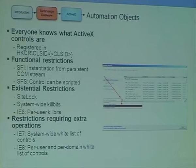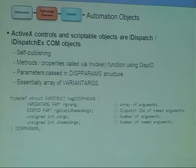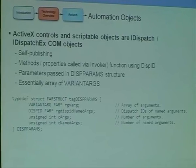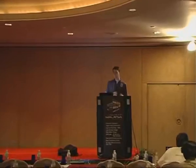Kill bits are a mechanism where, when an ActiveX control is known to be dangerous in an unsafe environment, IE can set a registry key to ensure it won't instantiate that object on behalf of the user. ActiveX controls utilize COM quite extensively. ActiveX controls are scriptable objects that expose an IDispatch or IDispatchEx COM interface — this interface is self-publishing, so you can find out the names of the functions and properties available. Whenever you want to call a method or access a property, the IDispatch Invoke function is called with an ID identifying which property or method you want to access.